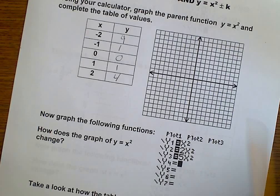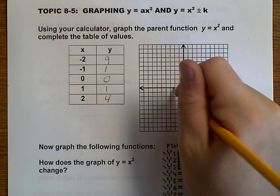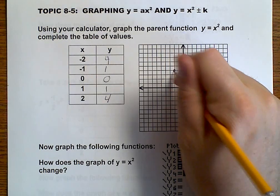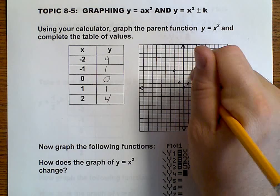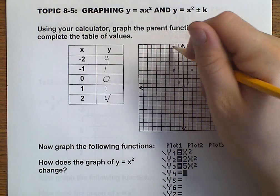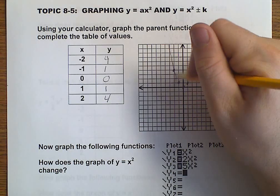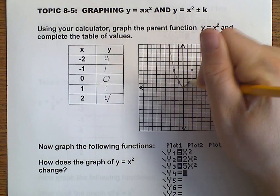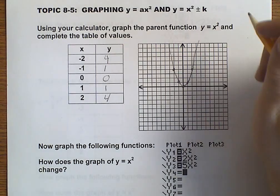And now, we plot these points: negative 2, 4, negative 1, 1, 0, 0, 1, 1, and 2, 4. And so, we draw our graph.